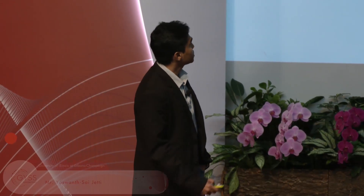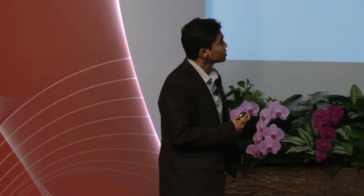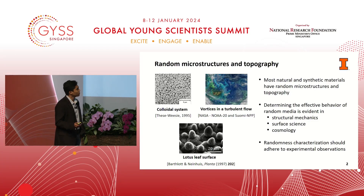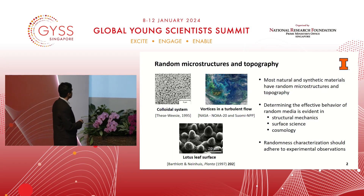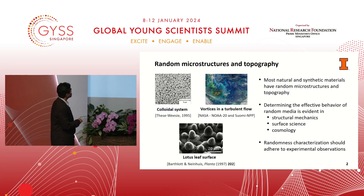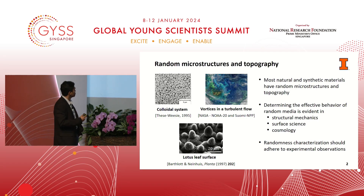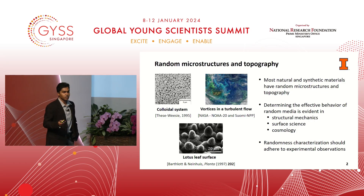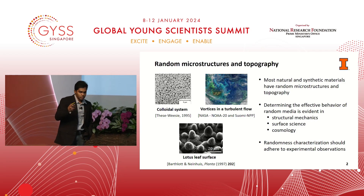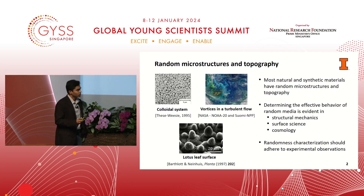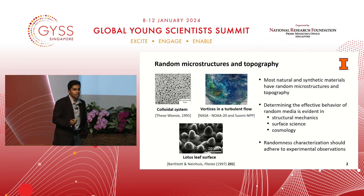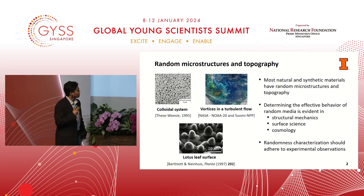In my work, I am interested in studying physical phenomena that involves randomness. Most natural and synthetic materials have random microstructures, and many of them have random surface topographies. For instance, consider this lotus leaf surface — we have random hierarchical patterns, and that is what is responsible for its superhydrophobicity. There are many other phenomena in which this randomness plays a crucial role, such as turbulent fluid flows. So whenever we want to study such systems involving randomness, the first thing we need to do is characterize the underlying randomness, and that is the focus of today's talk.